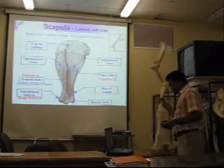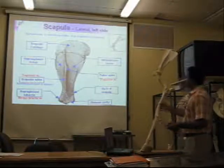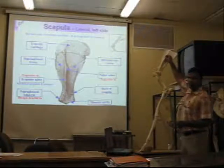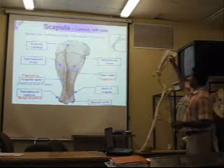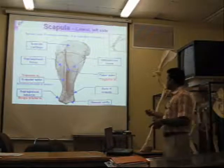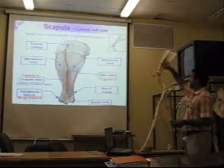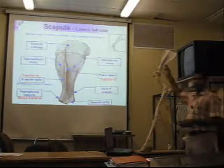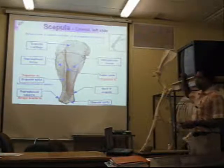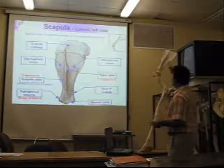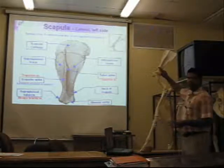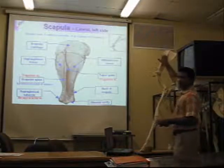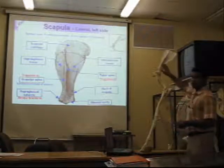We will start with the scapula. On the lateral side it has a spine of the scapula. It has a tuberous part here — the tuber spine — which gives attachment to the trapezius muscles. Unlike ruminants, there is no acromion process; the acromion process is absent in the equine. From the scapular notch, the suprascapular nerve passes, which innervates the supraspinatus and infraspinatus muscles.